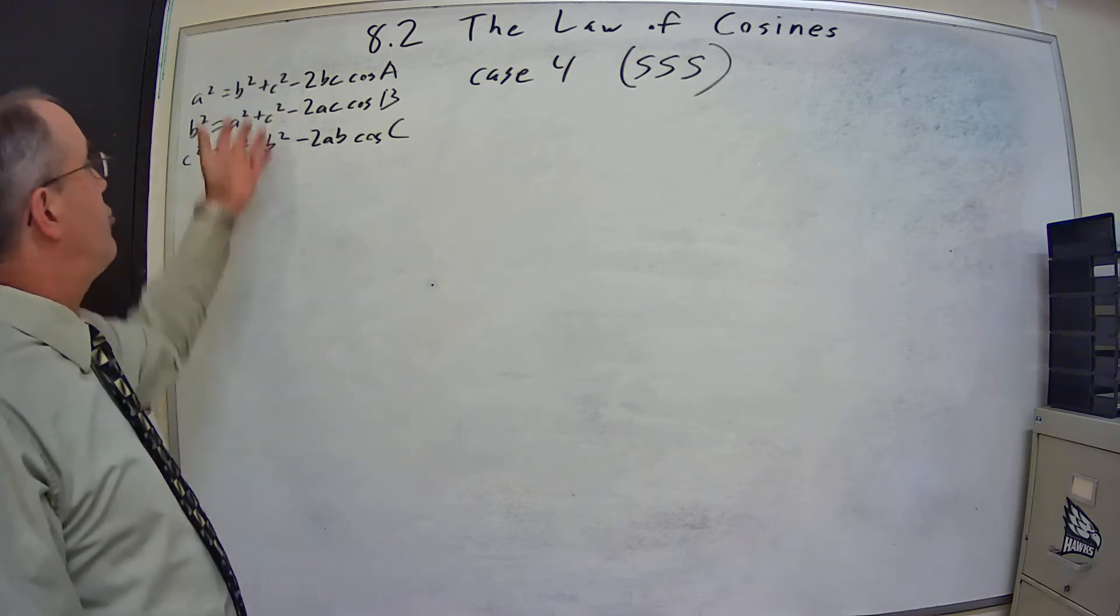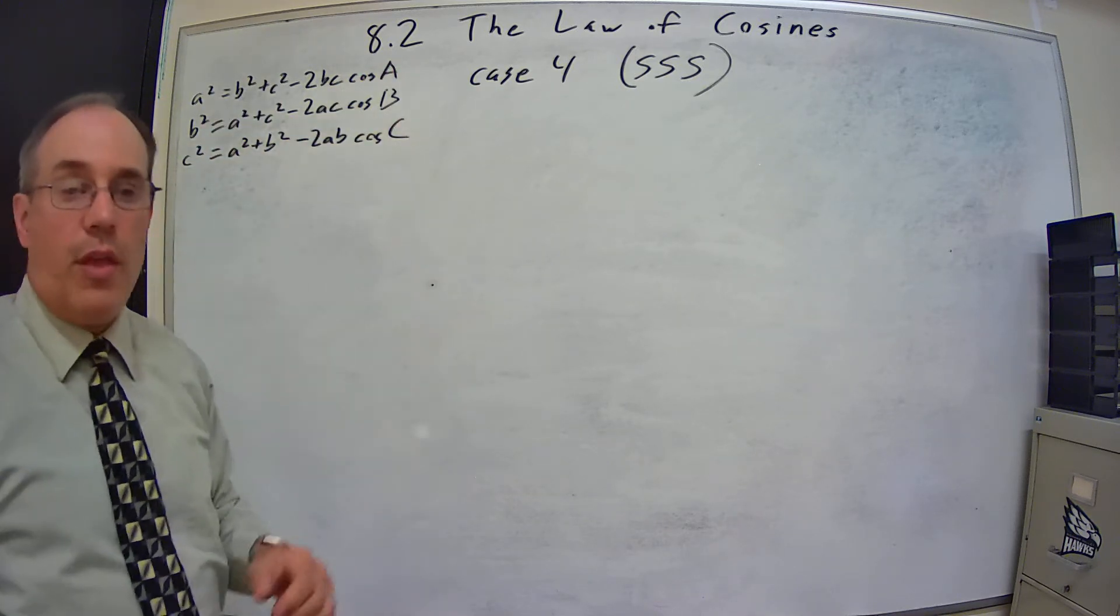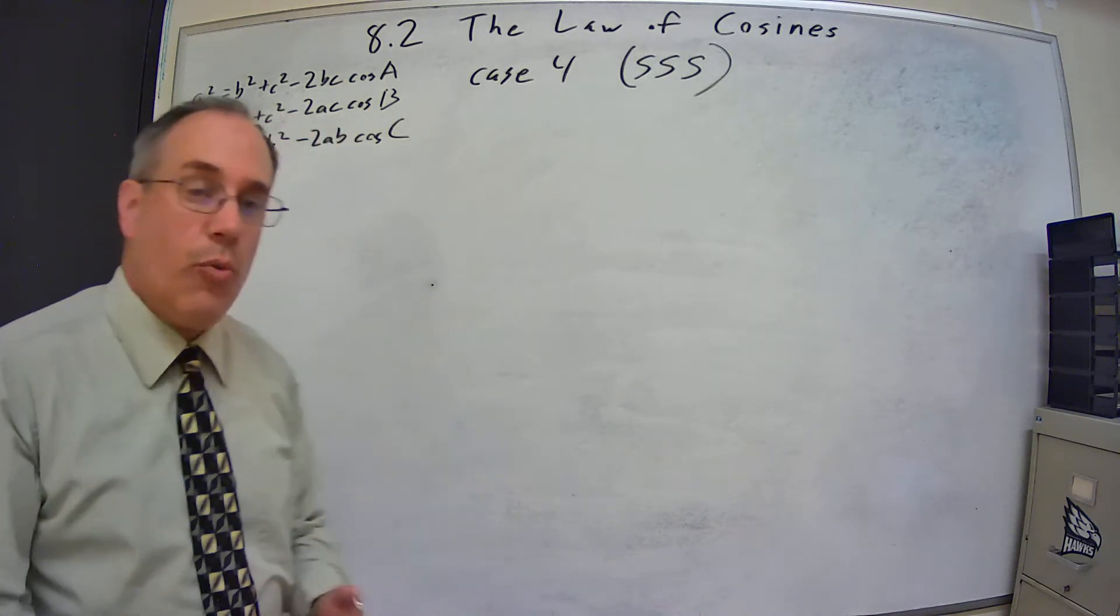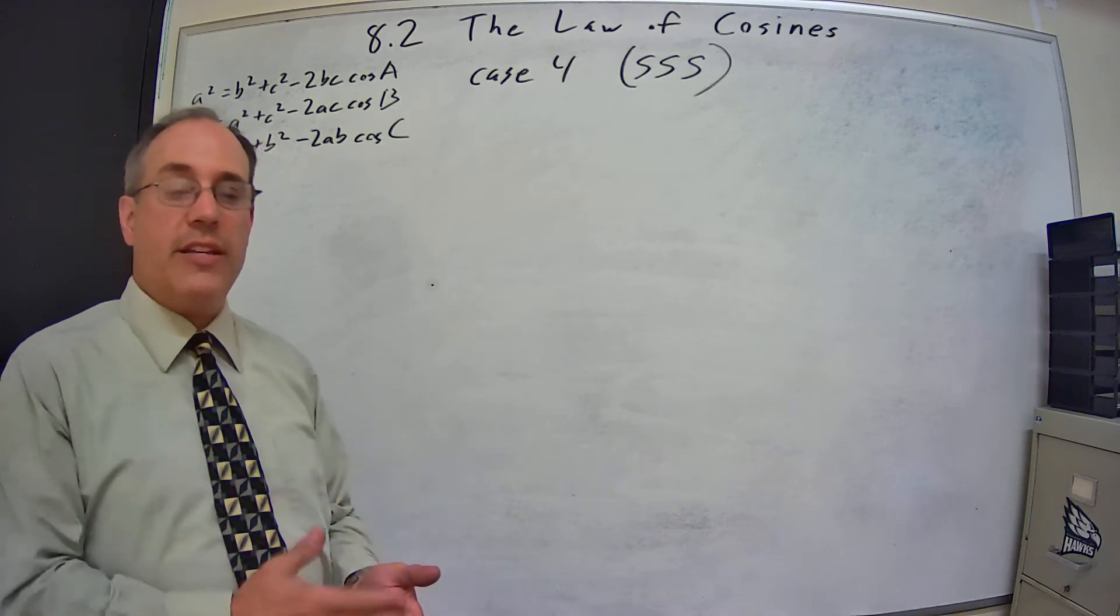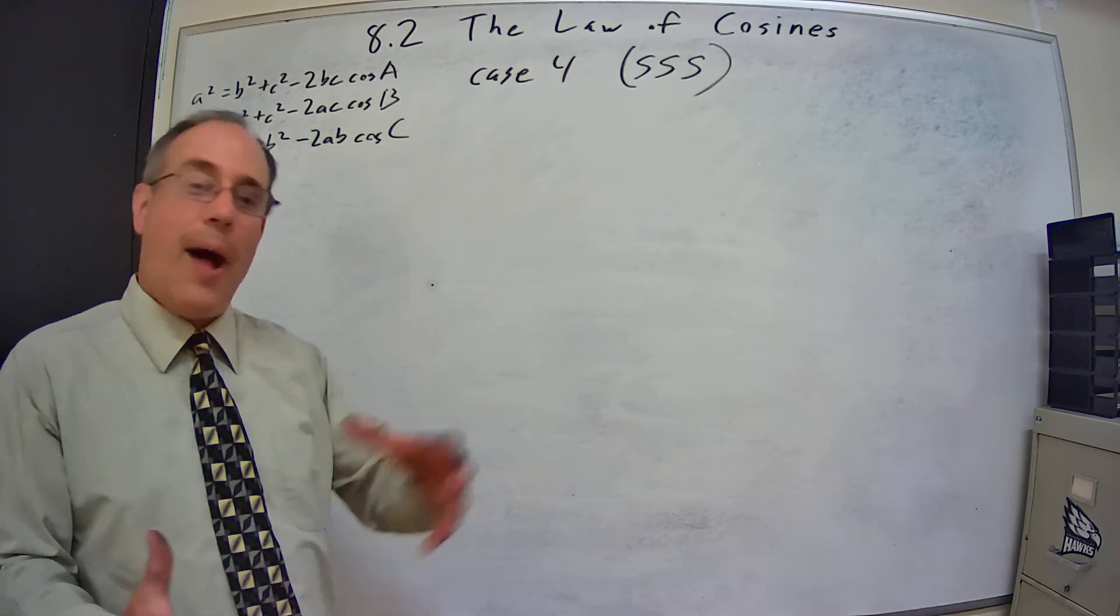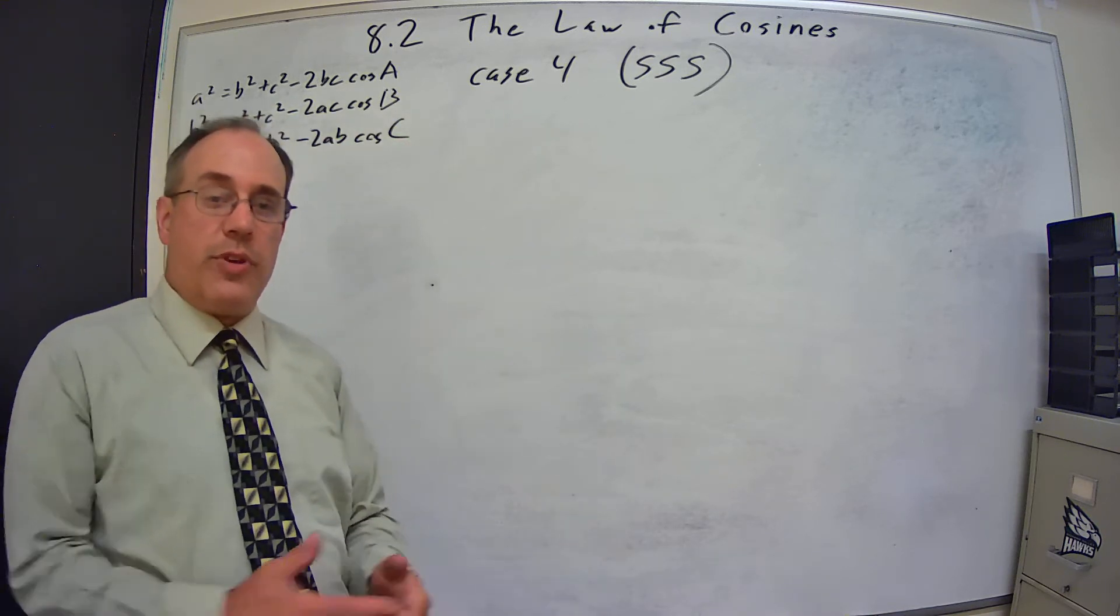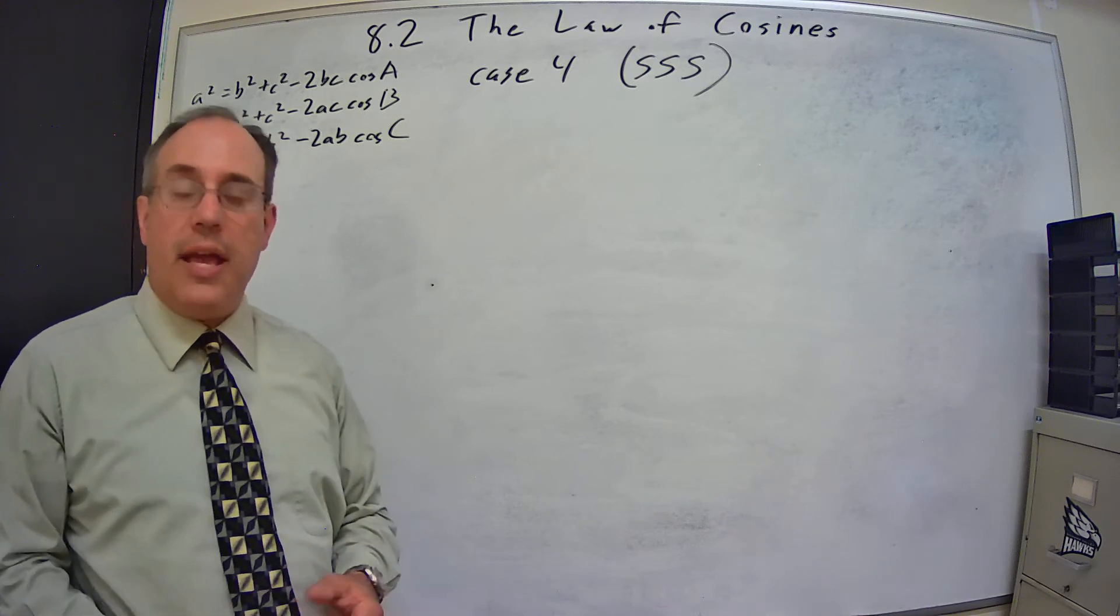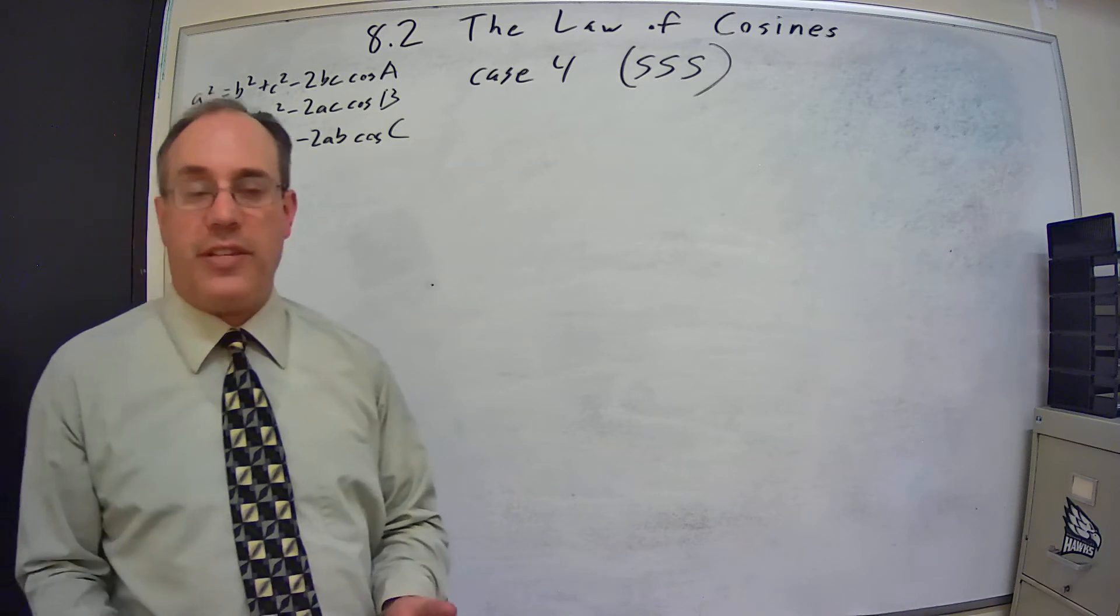So we can choose which one we want to use and solve for the angle. Now that we have an angle, we can then use the law of sines to find another angle because we have an angle opposite the side since we have all three sides. So we can find a second angle by doing the law of sines, and then the third angle we can find by using the sum of interior angles.